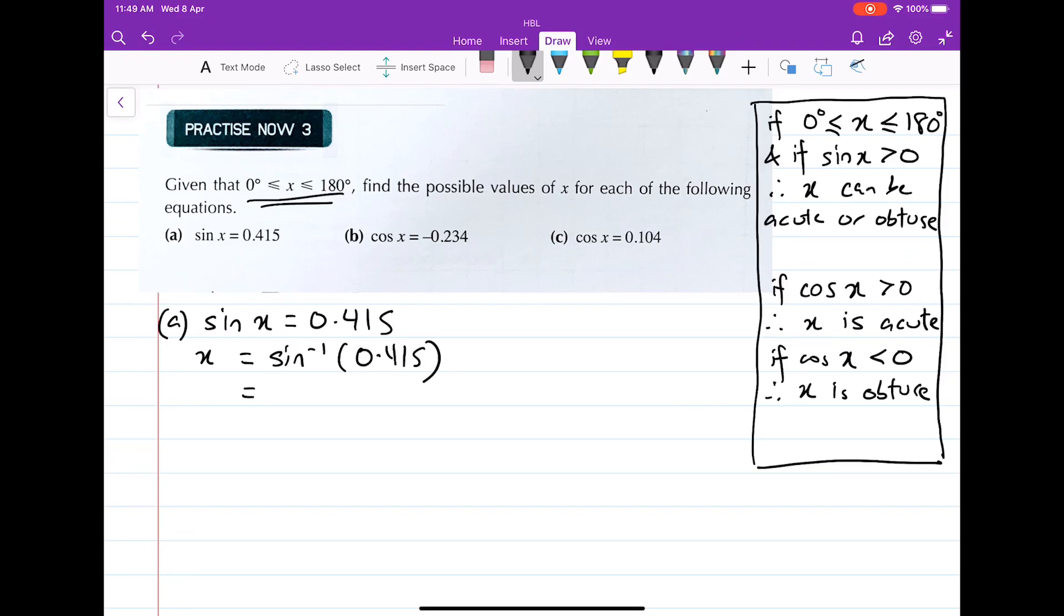x is equals to the inverse sine of 0.415, which equals you will get an angle of 24.519, which is approximately equals to 24.5 degrees. Because angles have to be rounded off to 1 dp.